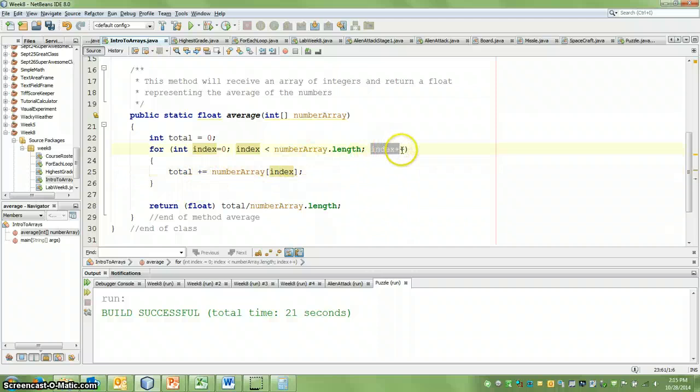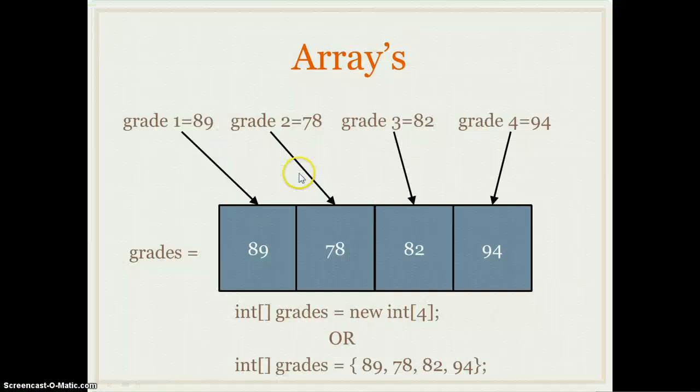And then it's going to increase our counter. We'll go up. It's going to check, is two less than four? It is. So it'll keep going through, and it'll add up each of the numbers in our array.